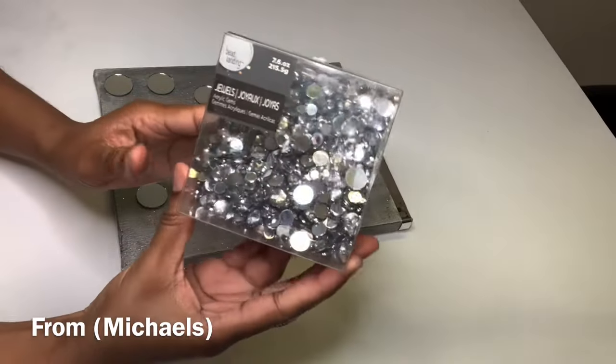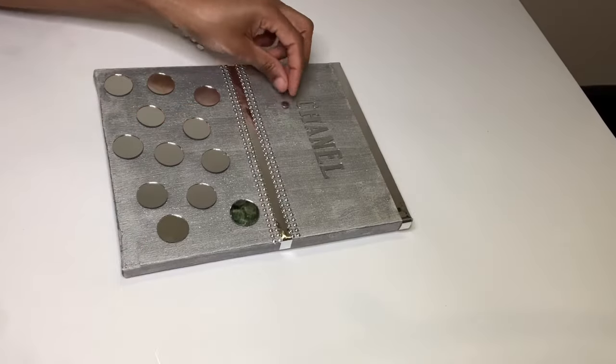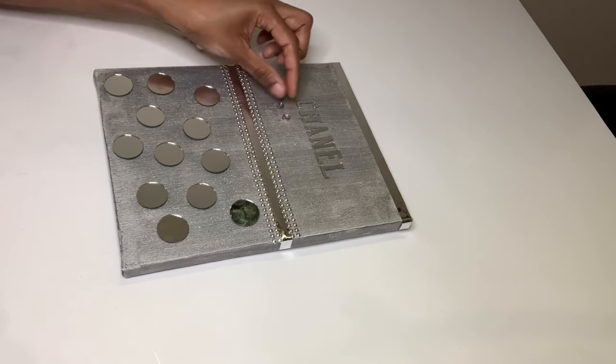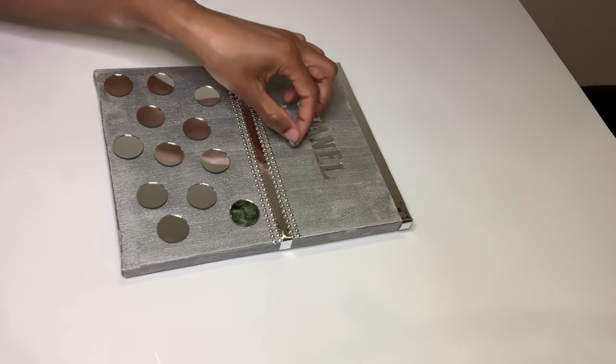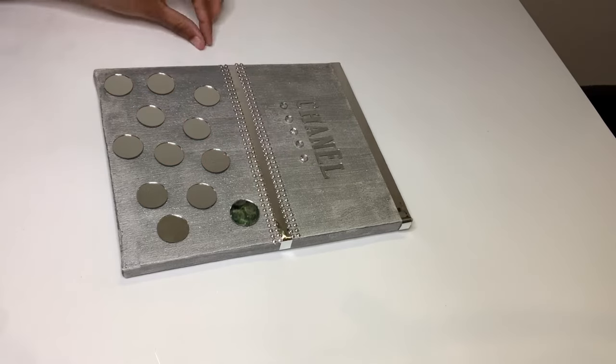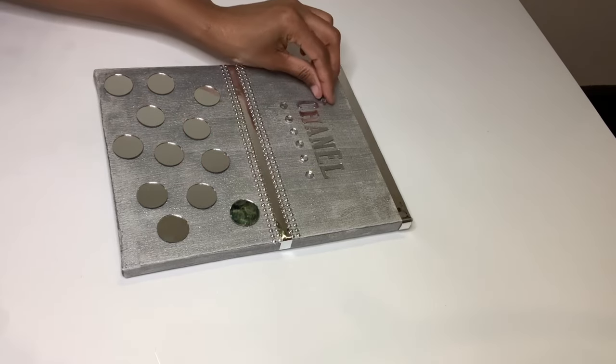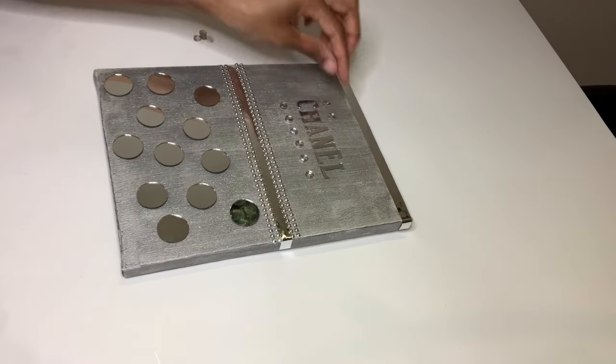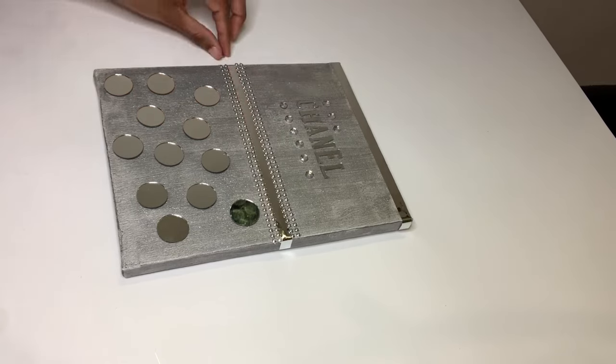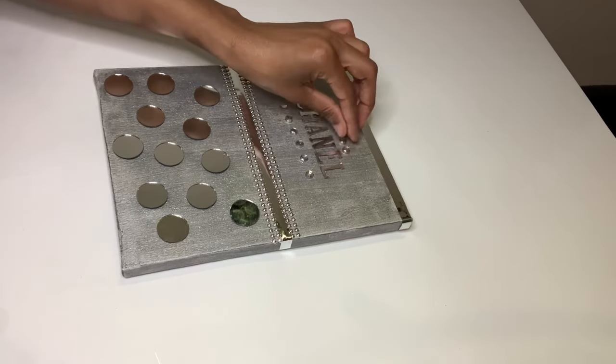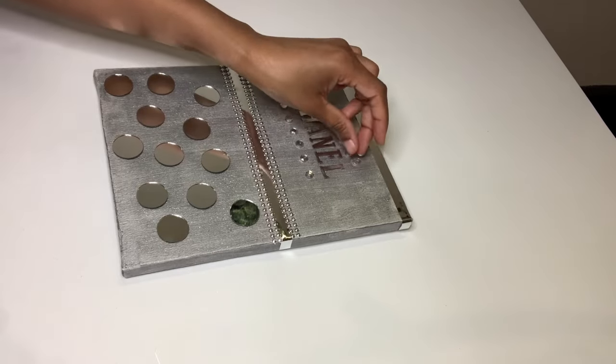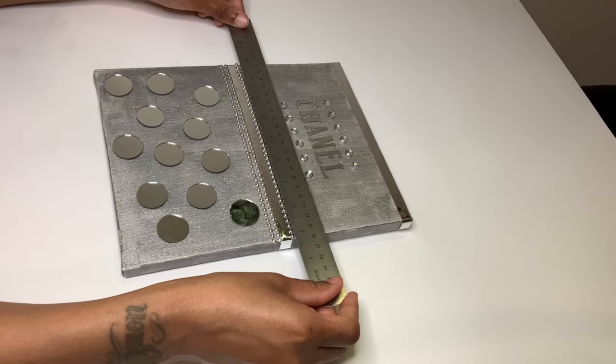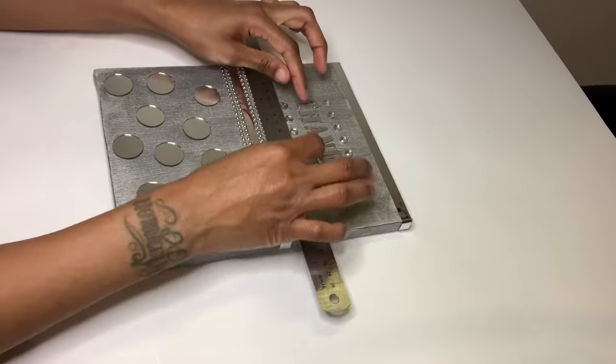I'm placing six of these gems at the bottom of my letters and also at the top totaling 12 gems. I'm using my ruler to make sure my gems are as straight as possible.